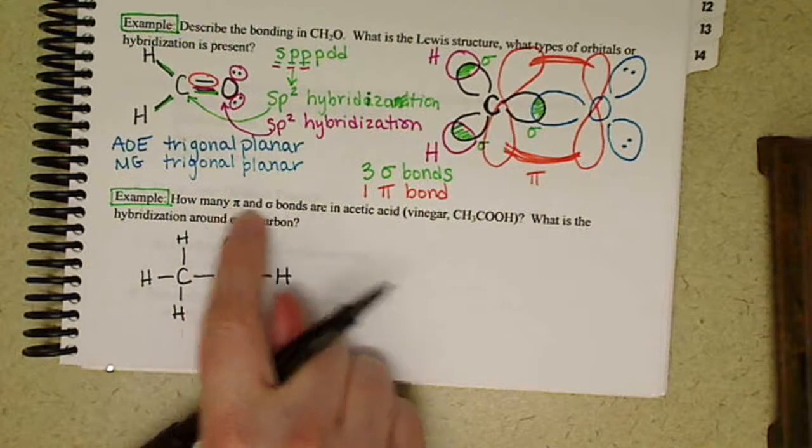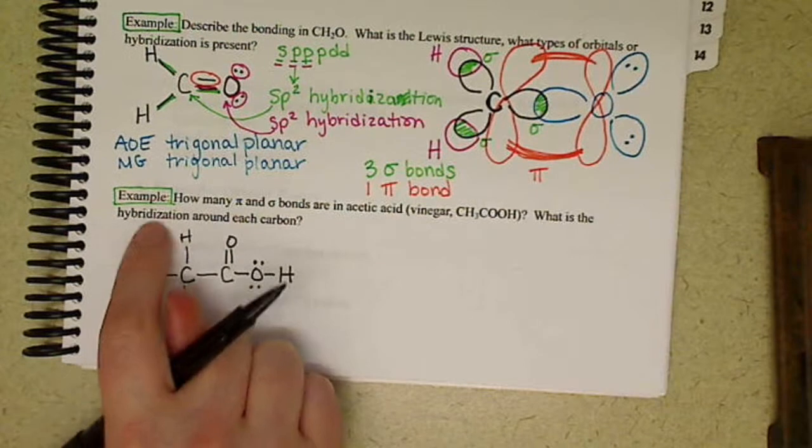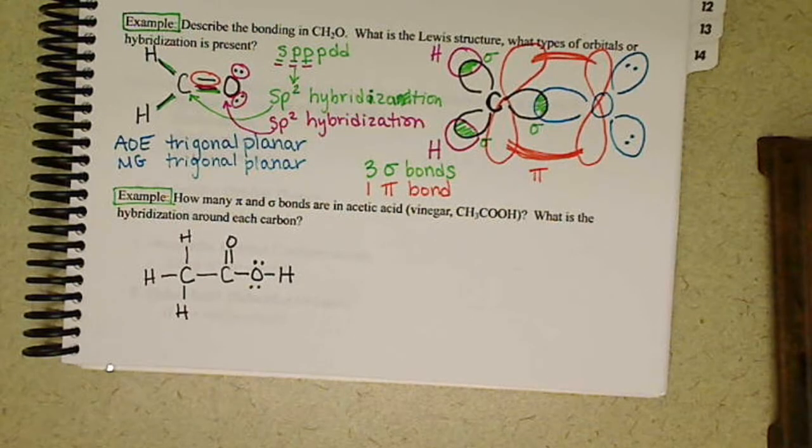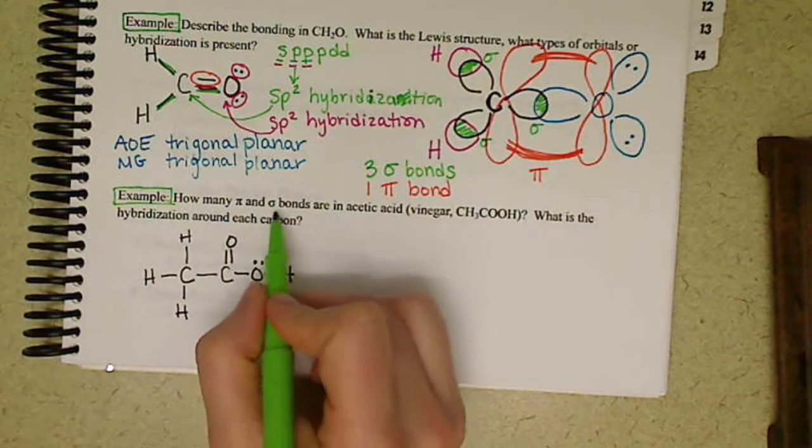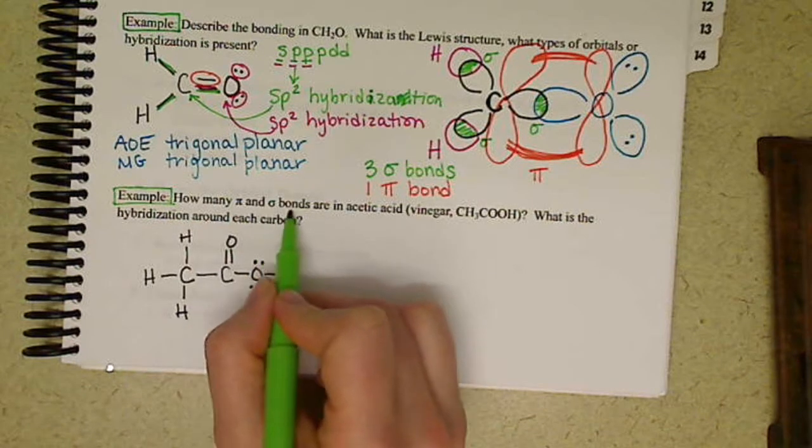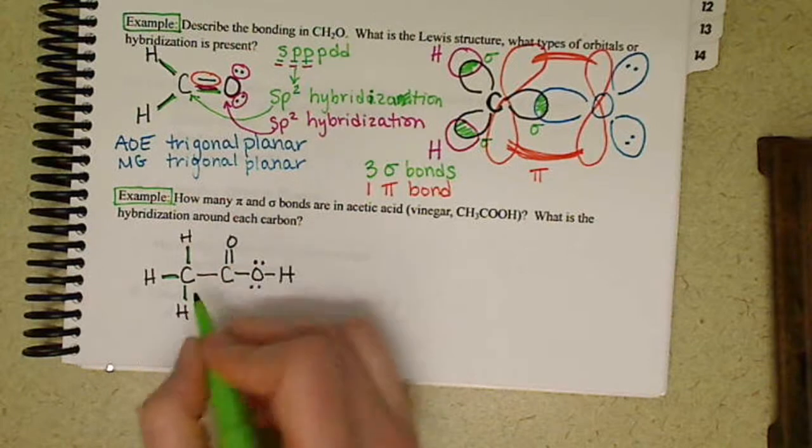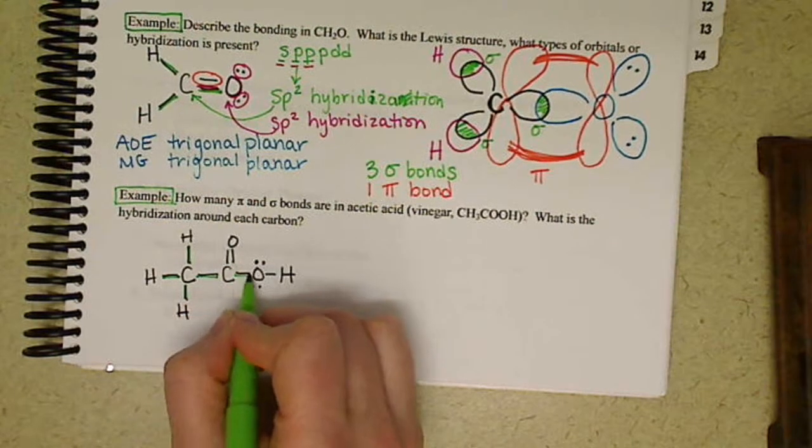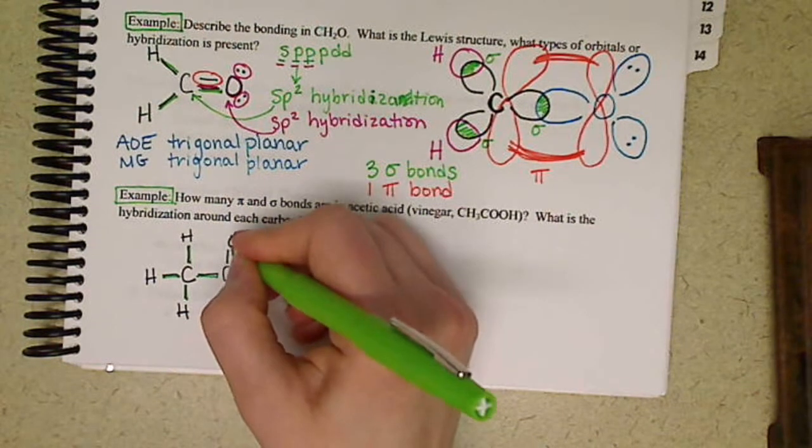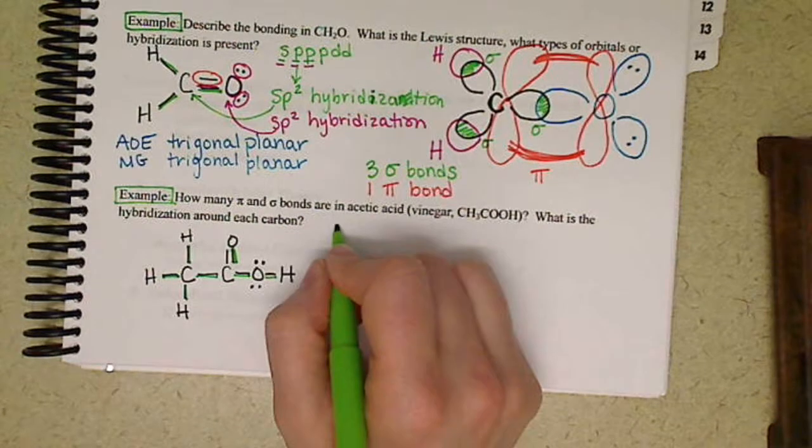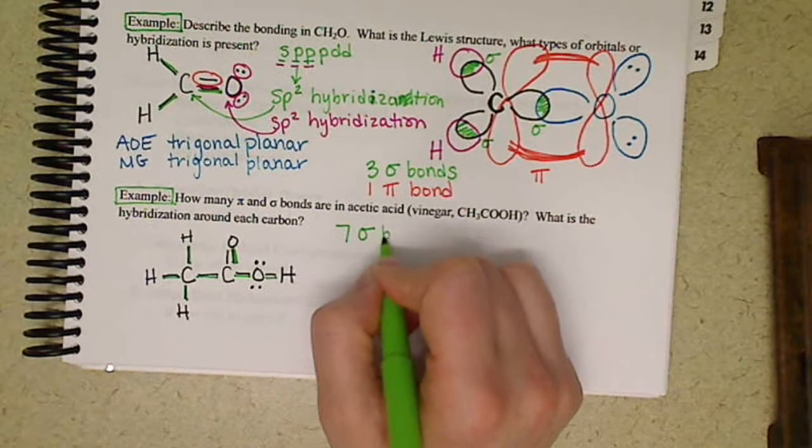We're just looking at our sigma and our pi bonds, and then we'll look at our hybridization. Sigma bonds are our first bonds, so we have one, two, three, four, five, six, seven. So we have seven sigma bonds.